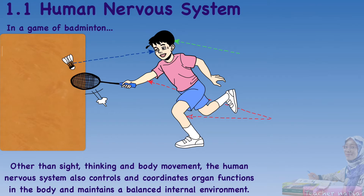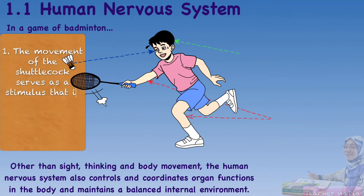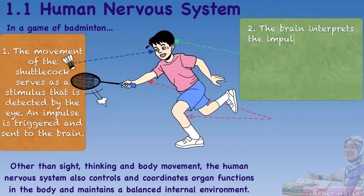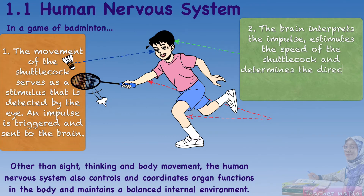Look at the diagram. In a game of badminton, the movement of the shuttlecock serves as the stimulus that is detected by the eye. An impulse is triggered and sent to the brain. The brain interprets the impulse, estimates the speed of the shuttlecock, and determines the direction and the pattern of body movement.